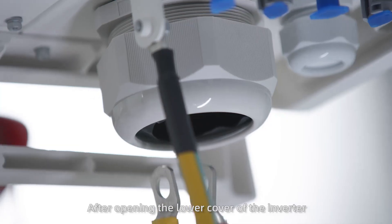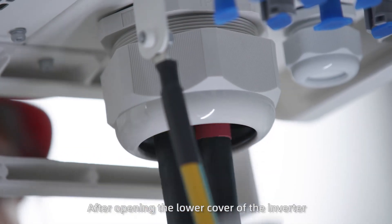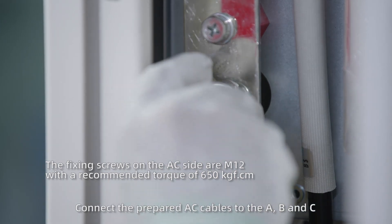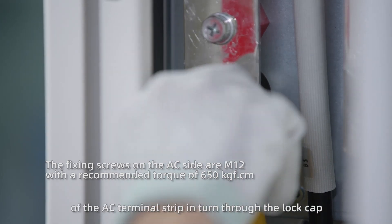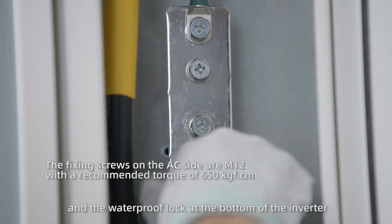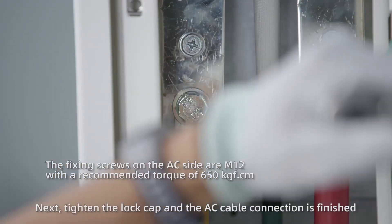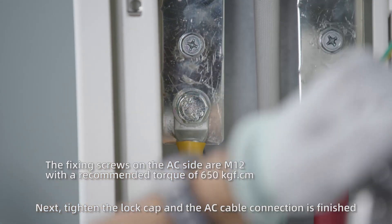After opening the lower cover of the inverter, connect the prepared AC cables to the A, B, and C of the AC terminal strip in turn through the lock cap and the waterproof lock at the bottom of the inverter. Next, tighten the lock cap, and the AC cable connection is finished.